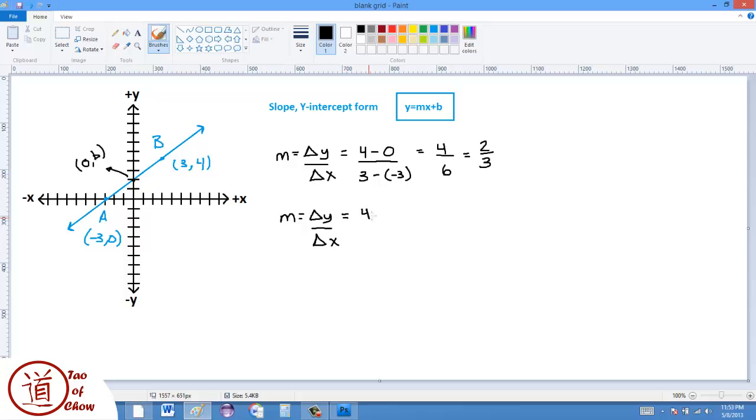So I'm going to use 4 minus this lowercase b, so this 4 and this b, all over 3 minus 0. And I will get 4 minus b all over 3 is equal to the slope, which is 2 thirds. So I've got an equation like this.